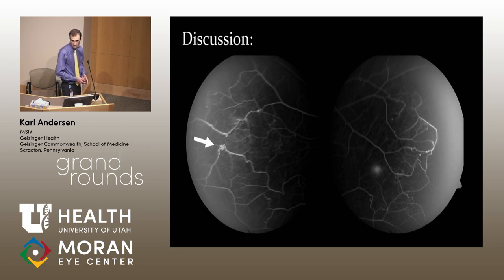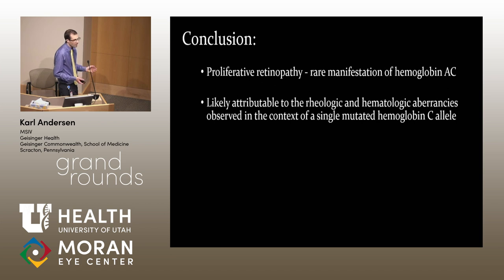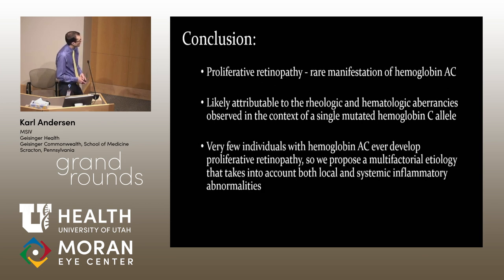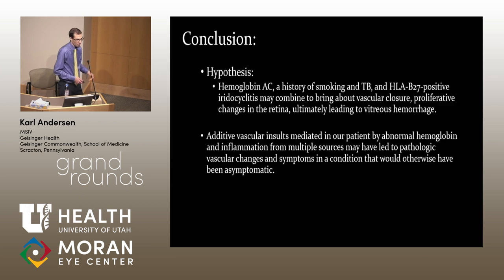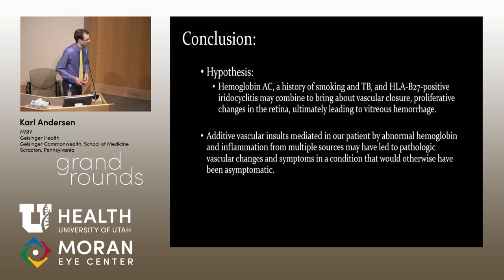In conclusion, this is a very rare case of hemoglobin AC. There have been some studies showing rheological abnormalities in people with hemoglobin C trait, so that could have been contributing. Very few individuals ever develop these ocular symptoms, so maybe there's a multifactorial etiology accounting for both local and systemic effects. This person had a lot of risk factors: hemoglobin AC with aberrant blood cells, history of smoking and tuberculosis, HLA-B27 positive iridocyclitis. Maybe the combination of those was additive, bringing about vascular closure and proliferative changes.